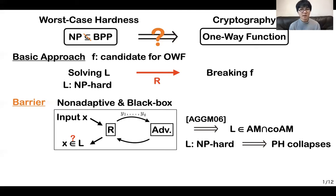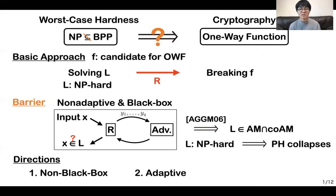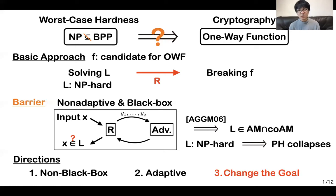This previous result might look a little negative, but it gives a very important direction for us. The first one is developing non-black box techniques. The second one is developing adaptive techniques. But at present, there are few success stories on such somewhat complicated techniques, so it might be very challenging to get such a reduction. The goal of this work is to suggest a third choice: to change the goal, or in other words, to get intermediate cryptographic primitives instead of standard cryptographic primitives.